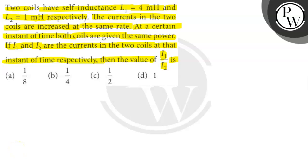Inductors resist change in current. If current increases, the inductor resists an increase in current, and if the current decreases, the inductor resists a decrease in current. Self-inductance occurs when current is induced in a wire or coil due to the current already passing through it by applying voltage via some external factor. In a current-carrying wire, a magnetic field develops in the plane perpendicular to the wire. A change in current causes changes in the magnetic field.